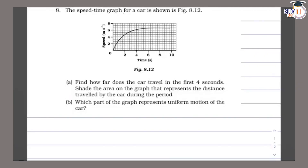This is question number 8, which is in Class 9th NCERT in the Motion chapter. In this question, we have been given a speed-time graph. We need to find how far the car travels in the first 4 seconds, and shade the area on the graph that represents the distance travelled by the car during this period.